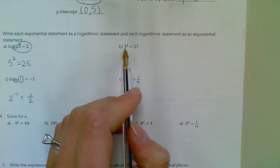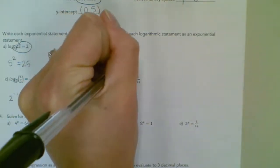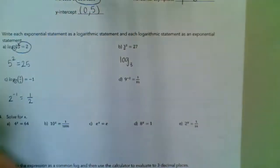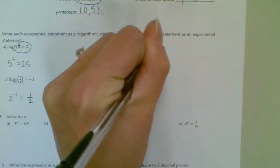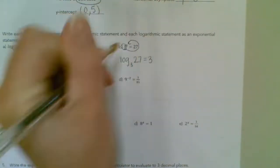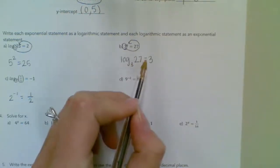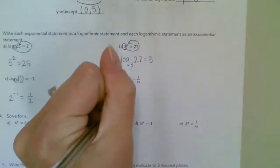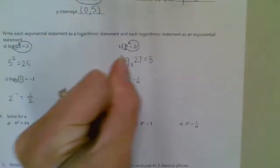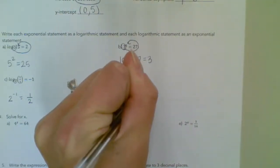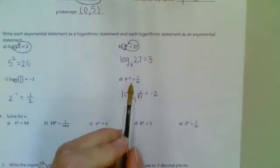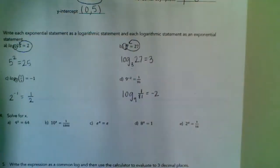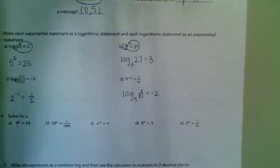Let's do letter C. So this base is 2 — 2 to the power of negative 1 equals 1 half. Again, 2 to the negative first is 1 half. That logically makes sense. If it does not logically make sense, then you did something wrong. Letter B — this is an exponential form, so we need to write it in logarithmic. The base of the exponential form is the base of the log of 27 equals 3. And 3 to the third is 27. Letter D is log base 9 of 1 over 81 equals negative 2. You will have to rewrite these on a test tomorrow.